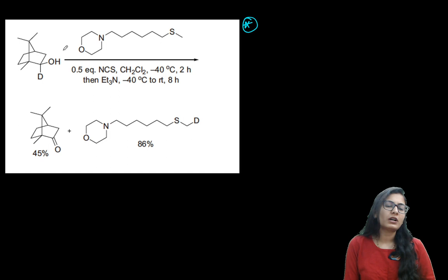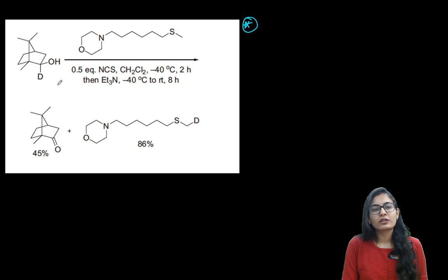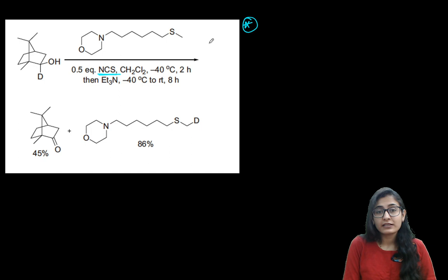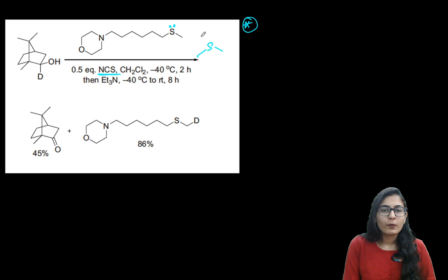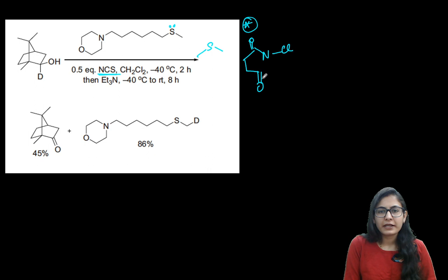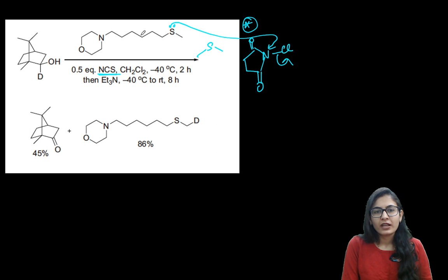Now let's see a very important example. Try to stop the video and do this by yourself. You have a catalytic amount (0.5 equivalent) of NCS, and instead of DMS you have a much larger sulfide. The sulfur of this larger sulfide is going to attack on the nitrogen of NCS in the same manner, getting connected to nitrogen, and then oxygen of the alcohol attacks over sulfur.